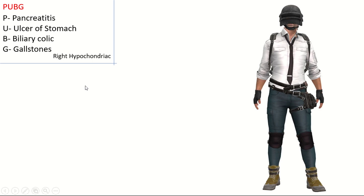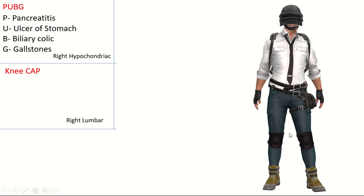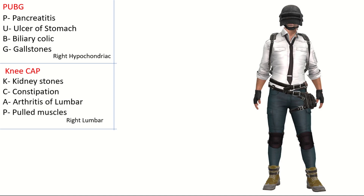Going down from the right hypochondriac region we have the right lumbar region, and the mnemonic here is KCAB — like kneecap. You can relate this to the character wearing a kneecap. K is for kidney stones, since the right kidney is present here; C is for constipation; A is for arthritis of the lumbar vertebrae; and B is for pulled muscles or muscle spasms.